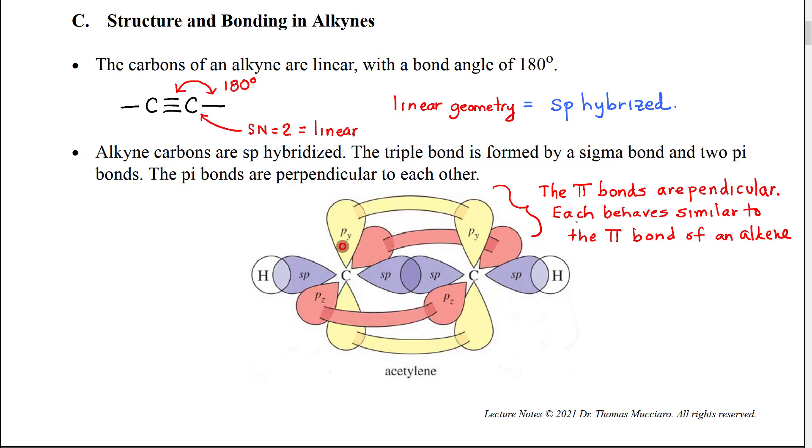So it will use the first p orbital to make a bond with a p orbital on the other carbon of the alkyne. And then perpendicular to that, there will be a second pi bond between this p orbital and that p orbital.